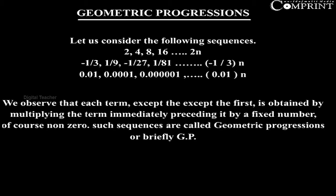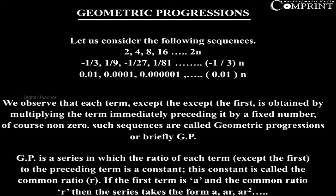Such sequences are called geometric progression or briefly GP. GP is a series in which the ratio of each term to the preceding term is a constant. This constant is called the common ratio.